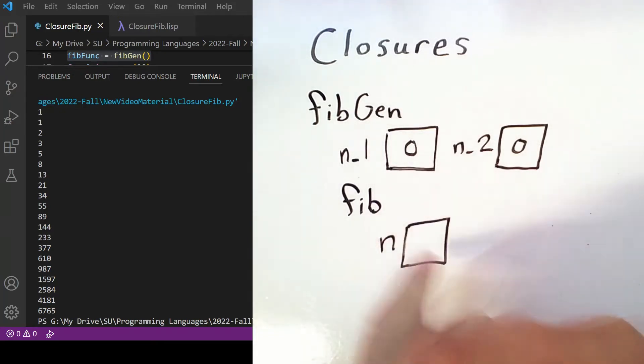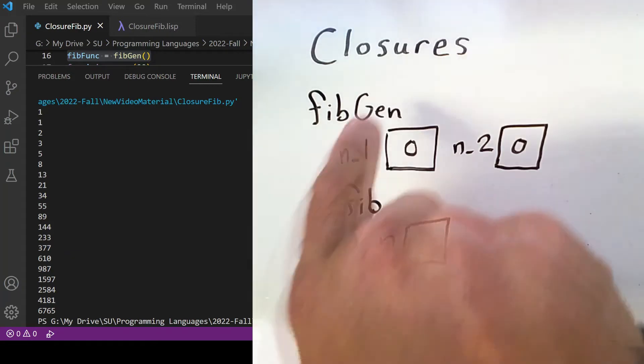But where did these exist? Let's walk through the first few steps of executing this to get a sense for where these variables existed. This is a good point to say that what we've defined here is a closure.